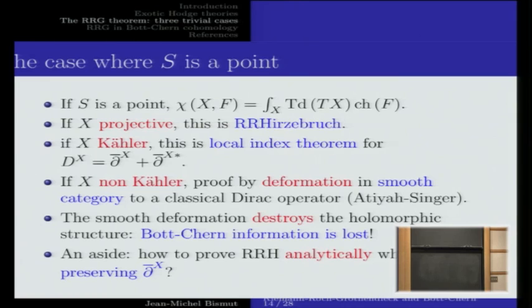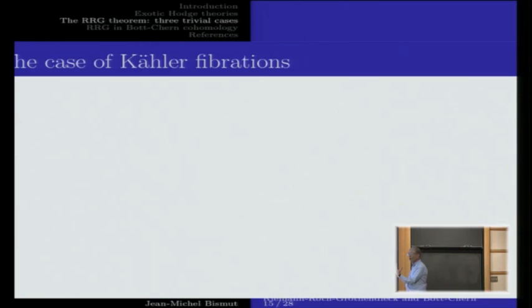An important aside: how can we prove Riemann-Roch-Hirzebruch itself analytically while preserving the holomorphic structure of the problem — i.e., while preserving d-bar_X? This will serve as a toy model, having nothing to do a priori with the problem of families, but asking how to prove Riemann-Roch-Hirzebruch while preserving the holomorphic structure.